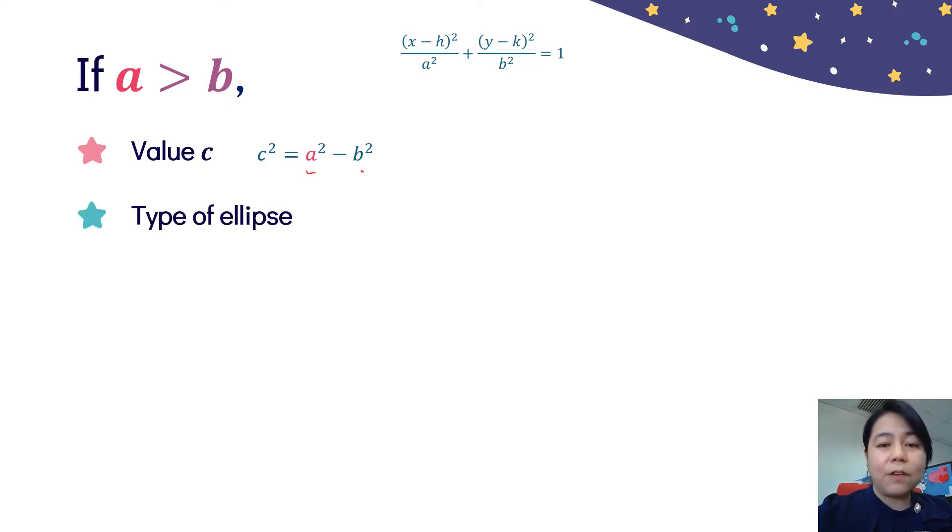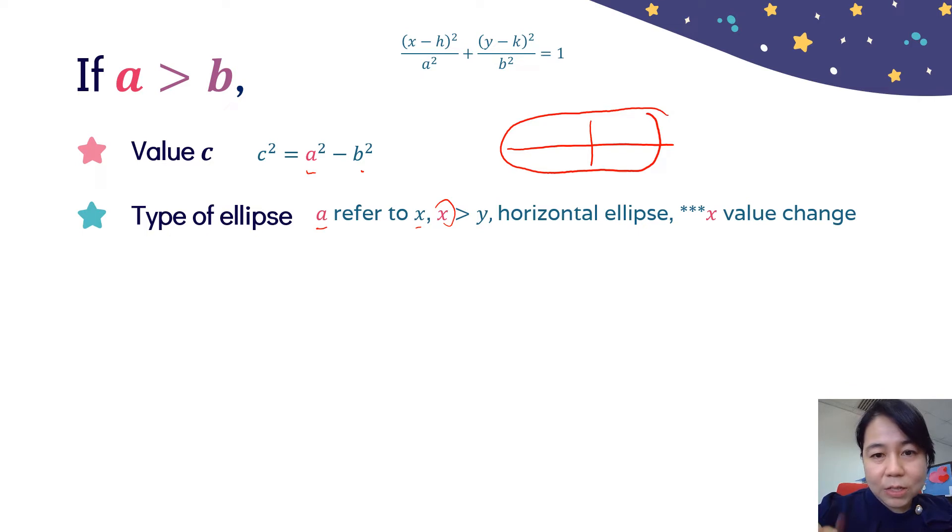For the types of the ellipse, we need to check the value X and Y. Because A is always referred to X, so X will become greater than Y. The ellipse that will be formed is horizontal ellipse. X value change, that means X coordinate will change the value to find the foci and the vertex.